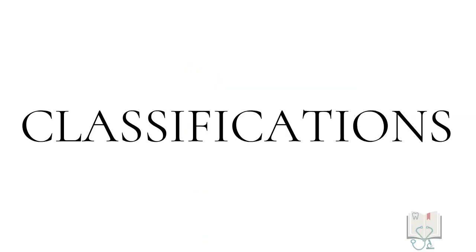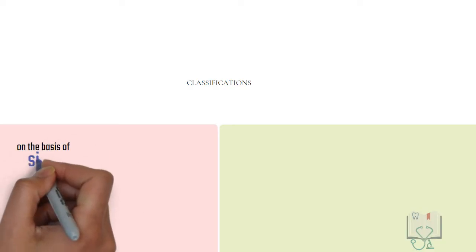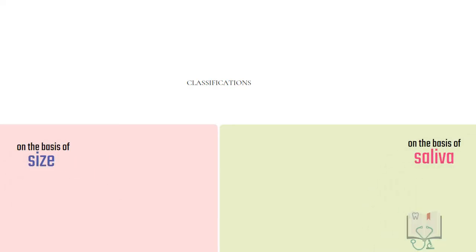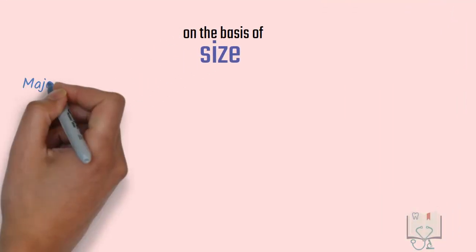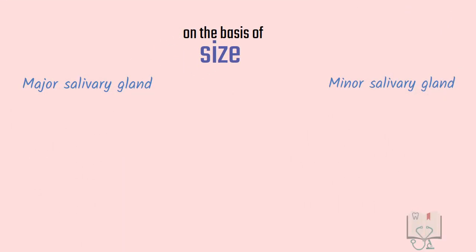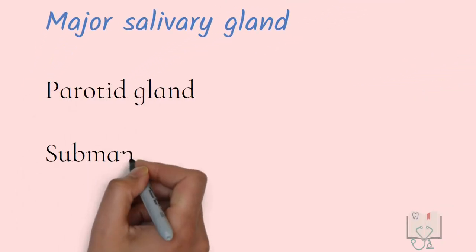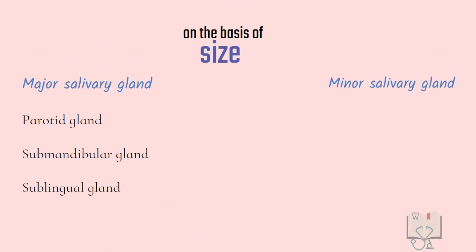Classification of salivary glands can be done on the basis of size and on the basis of type of saliva secreted. On the basis of size, they are classified as major salivary glands and minor salivary glands. There are three pairs of major salivary glands: parotid gland, submandibular gland, and sublingual gland.